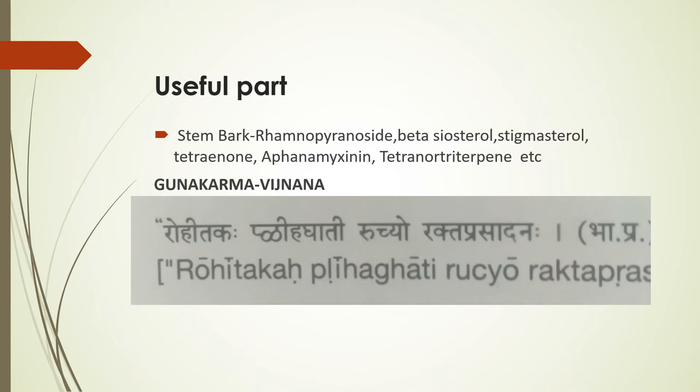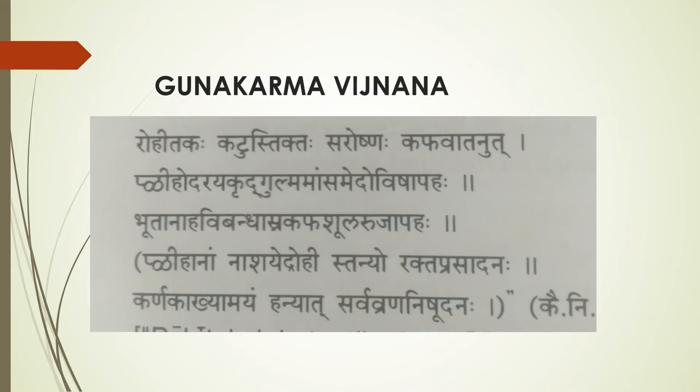Rohidaga is mainly known for pliha rogas. Rohidaga pliha ghadi, utchyo rekta prasadana — this is the main property of Rohidaga. Rohidaga is kadus tikta, sara, ushna, kabha-vadha-hara. It is beneficial in pliha dara, yagrth, gulma, mamsa meda, and visharogas.